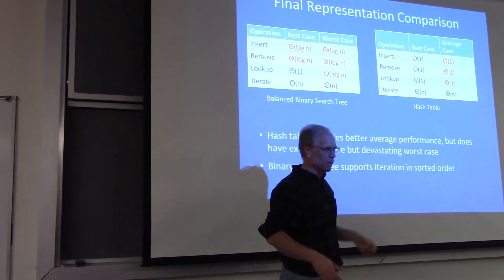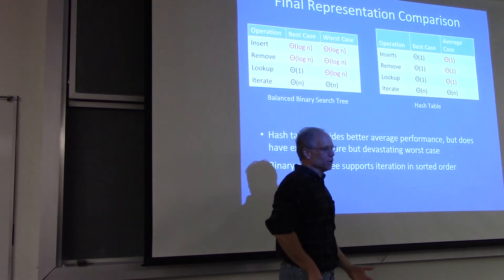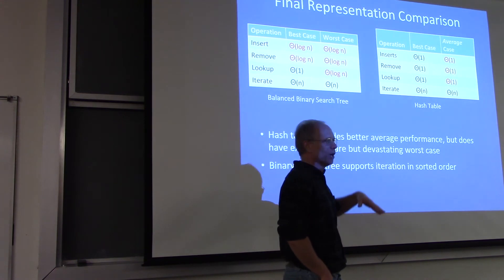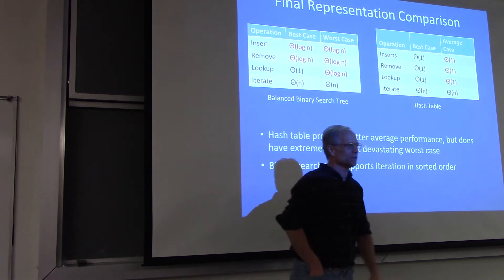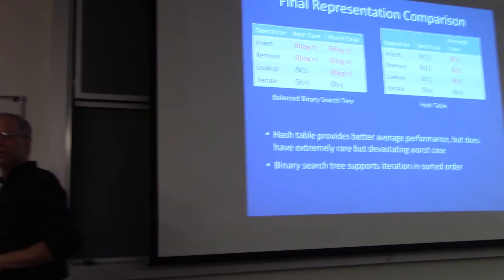Well, that is true. If you absolutely cannot deal with the catastrophic worst case, which I'm hiding here with the average. Again, if you've got your spaceship or nuclear reactor and the damage coming from hitting a worst case is catastrophic. Yes. You want to use a tree.